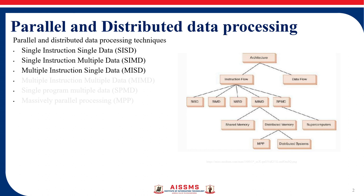Next we have distributed data processing. Distributed data processing is a model in which processors in different locations, which do not share memory, collaborate to process data. The processors communicate with each other through a network.